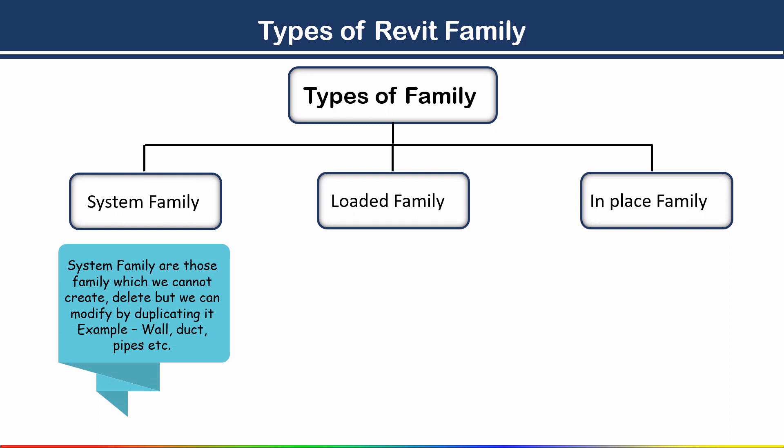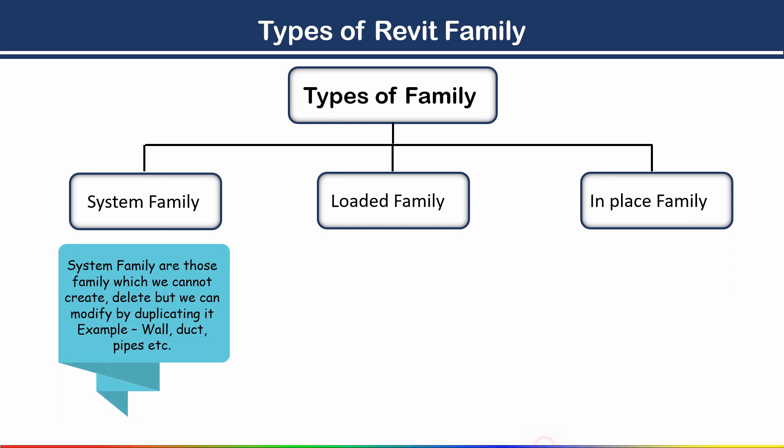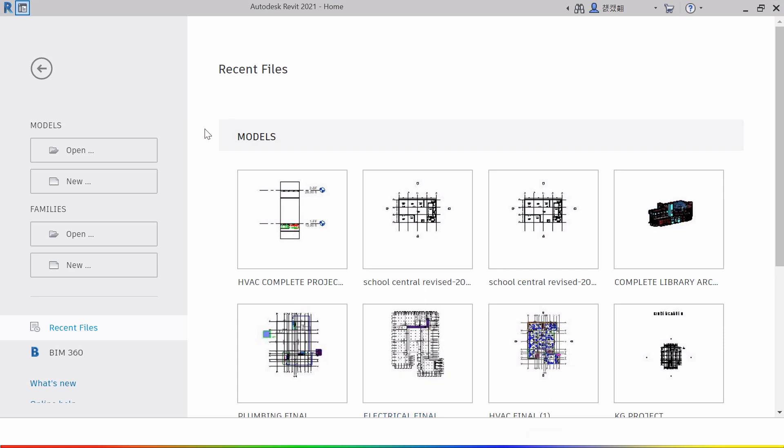What is a system family? System families are those families which we cannot create or delete, but we can modify by duplicating them. For example, walls, ducts, and pipes are system families. Let's open Revit software to see a clear example.